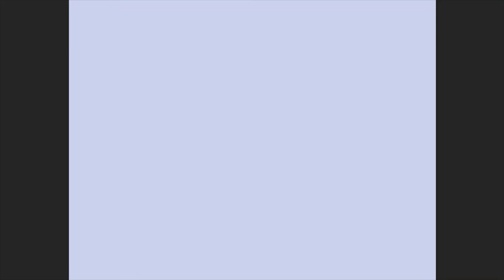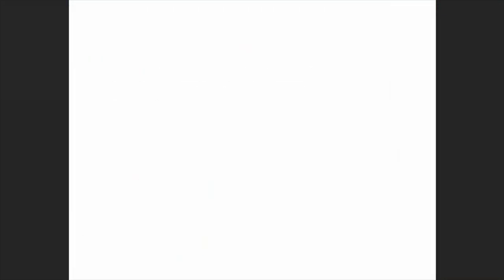To be able to do this, we needed to create a language to communicate with the computer, and MARC is what we use to tell the computers how to find library materials. It's not a cataloging standard like AACR2 or RDA — MARC is an encoding standard, or what the library staff sees on the back side of the catalog record. Information like the title, the author, the publisher is assigned a number and a series of letters to help the computer identify it. Programmers then write catalog programs instructing the computer on what to do with that information, and what you end up with is the catalog record.